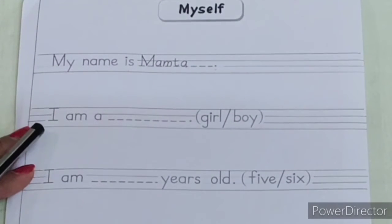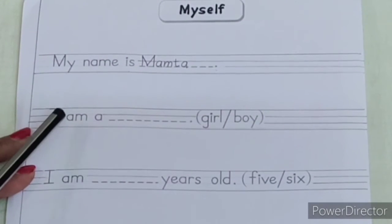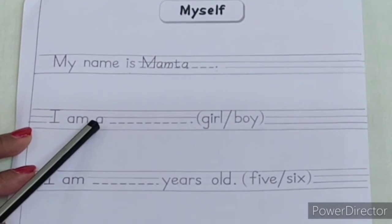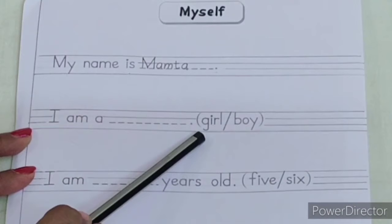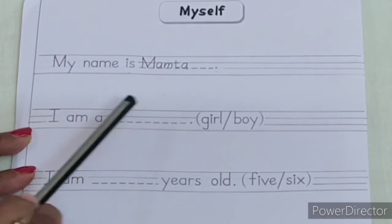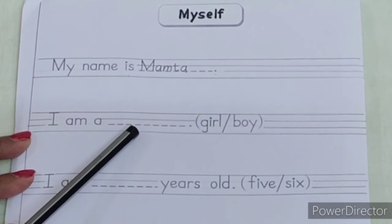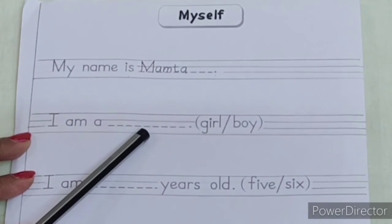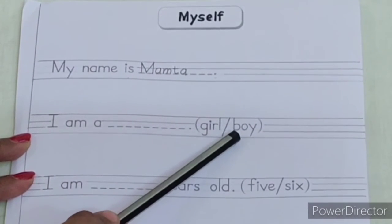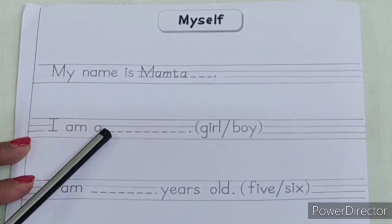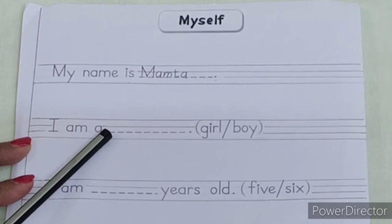Read the next one. Now if you are a girl, then you have to write G-I-R-L. And if you are a boy, then write down B-O-Y, boy.